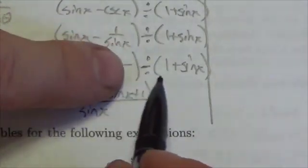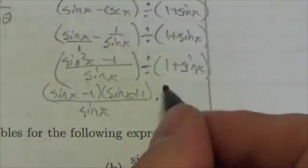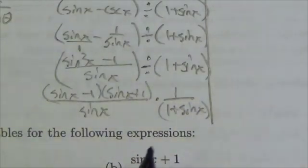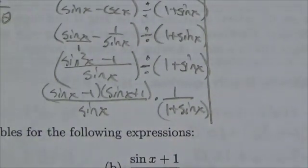I'm going to now multiply this by the reciprocal. Because I'm dividing by this thing here. So the easiest thing to do is to multiply that by the reciprocal which is just going to be 1 over 1 plus sine of x. But then there it is.